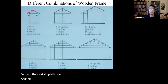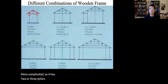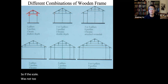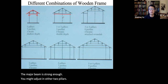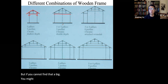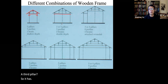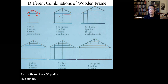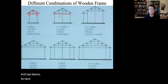A more complicated building has two or three pillars, five purlins, and two beams. If the scale is not too big and the major beam is strong enough, you might just need two pillars; but if you cannot find a big enough log, you might need a central third pillar. The use of purlins made the Chinese timber structure very different from, say, medieval European timber construction.